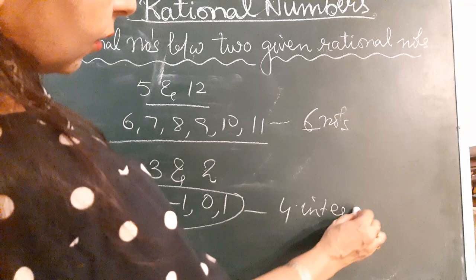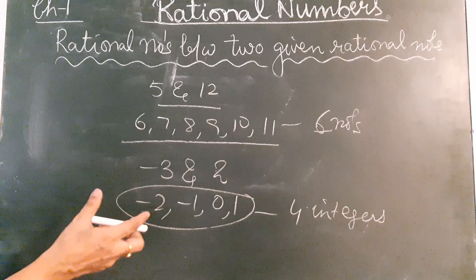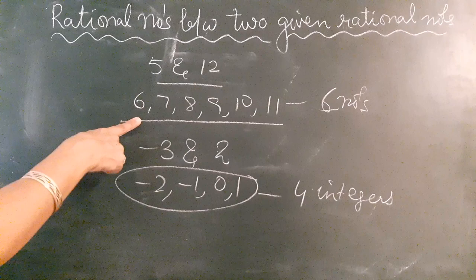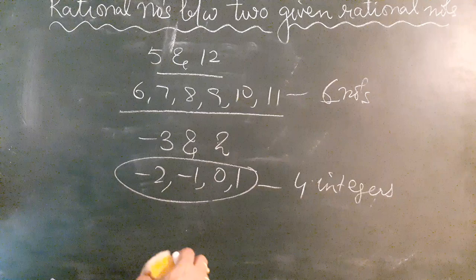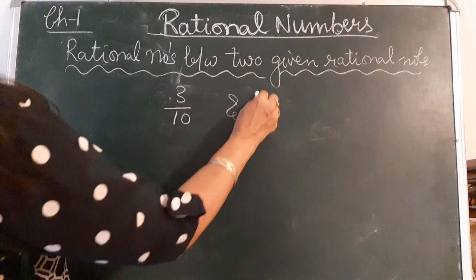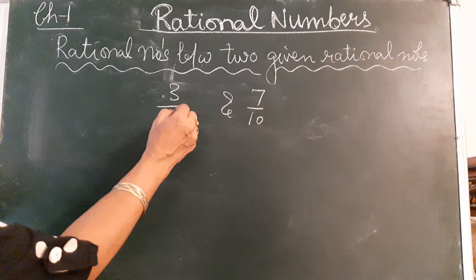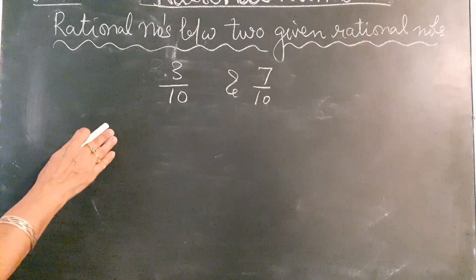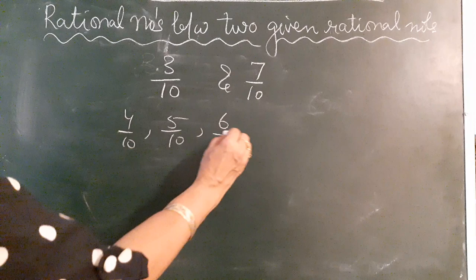So you will find that there are a limited number of integers between two given integers, and a limited number between two given natural numbers. But when we talk about rational numbers, suppose two rational numbers are given and you have to find rational numbers between them — you may think the answer is 4/10, 5/10, and 6/10.